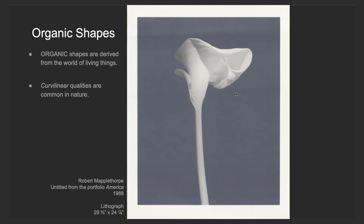I would not say that curvilinear applies to the previous image. Curvilinear does apply to this image of organic shapes. Organic shapes are derived from the world of living things. This is an image of a flower — an iris. These are curvilinear; they're not geometric, they're not rectilinear. They show curve. You might describe the big gray area, though, as rectilinear.